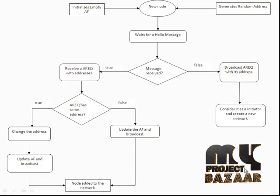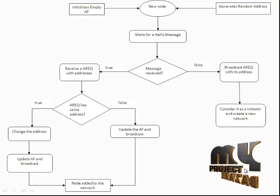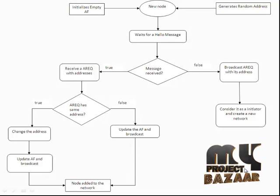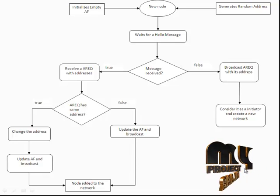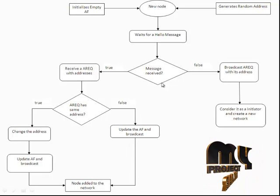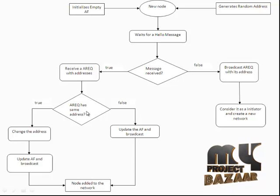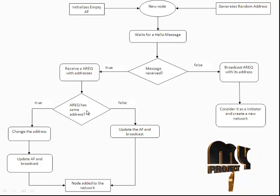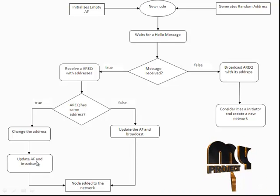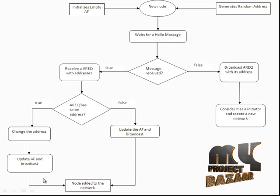The first flow is joining node management. An initialization node takes an empty address filter, randomly chooses an address for communication, and waits for a hello message. If the hello message is received, it checks the hello message request and verifies the received address. If the current address is the same, it changes the address, updates it, and broadcasts the address to the network.